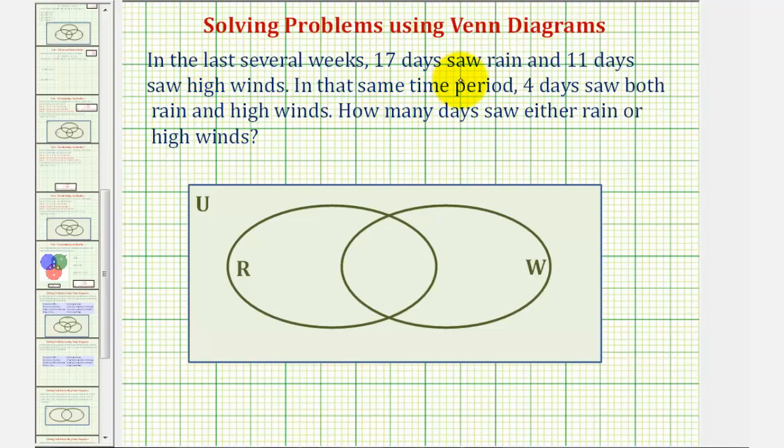In the last several weeks, 17 days saw rain and 11 days saw high winds. In that same time period, four days saw both rain and high winds. How many days saw either rain or high winds?